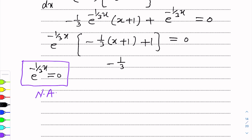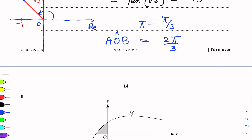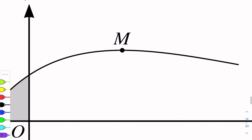Setting the bracket equal to 0: (-1/3)(x+1) + 1 = 0. Taking one term to the other side: (1/3)(x+1) = 1. Cross multiplying: x+1 = 3. From here x = 2. This is the x-coordinate of M, the maximum point. So we have found the x-coordinate of M, which is 2.